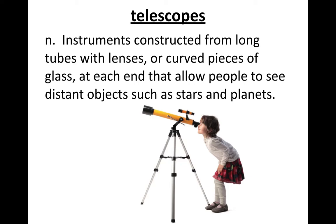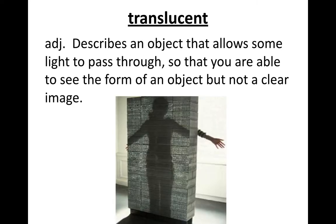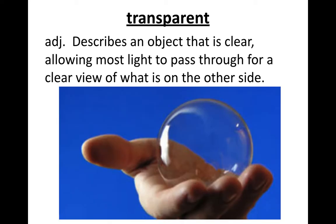Telescopes: instruments constructed from long tubes with lenses or curved pieces of glass at each end that allow people to see distant objects such as stars and planets. Translucent: describes an object that allows some light to pass through so that you can see the form of an object but not a clear image. Transparent: describes an object that is clear, allowing most light to pass through for a clear view of what is on the other side.